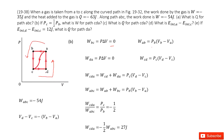Now we look at C-D-A. The work done by the C-D part is P_C times (V_D minus V_C). And the work done by D-A is zero, because the volume never changes along D-A. So we can write the full equations for W_CDA and W_ABC.